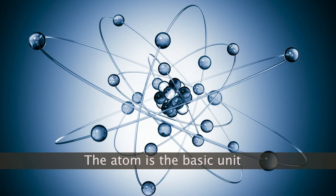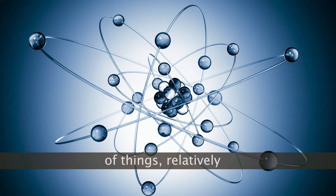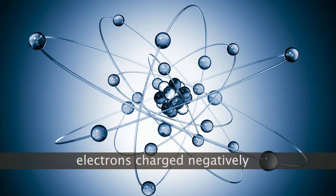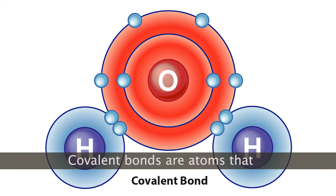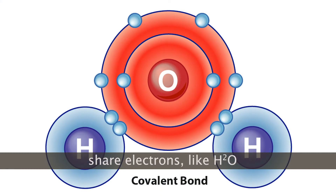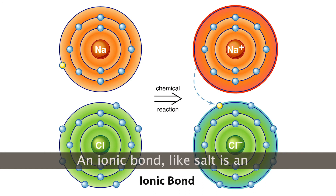The atom is the basic unit of things relatively. Positive protons, neutrons, electrons charge negatively. Covalent bonds are atoms that share electrons, like H2O. Ionic bonds, like salt, are an oppositely charged duo.